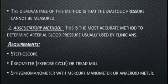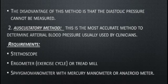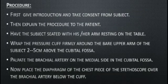The auscultatory method is the most accurate method to determine arterial blood pressure and is usually used by clinicians. Its requirements include a stethoscope — unlike the palpatory method — as well as an ergometer exercise cycle or treadmill for recording blood pressure after exercise, and a sphygmomanometer with mercury manometer or aneroid meter. The procedure will be discussed in the next video clip.